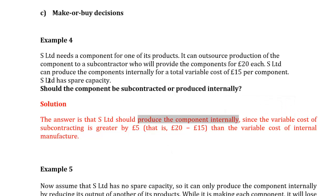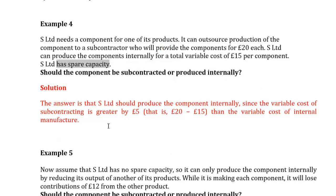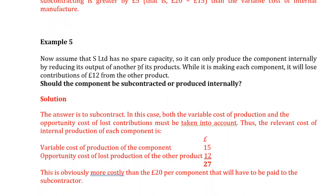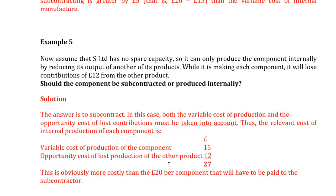Now let's change one thing: assume S Limited has no spare capacity and can only produce the component internally by reducing output of another product. While making each component, it will lose contribution of £12 from the other product — this is an opportunity cost. So the total cost of producing internally is £15 variable cost + £12 opportunity cost = £27. Comparing £27 with the external price of £20, the decision is to outsource to the subcontractor.